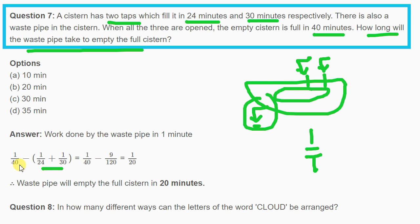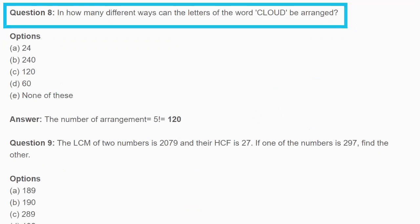One upon 40 minus one upon 24 for the first tap, minus one upon 30 for the second tap. We have to add 9 upon 120, so one by 40 minus 9 by 120 gives us one by 20.